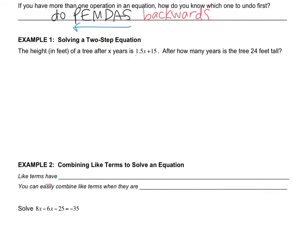So here's our expression that represents the tree, and here's our actual number that represents the tree. So we're going to take those two things and write an equation: 1.5x plus 15 equals 24.